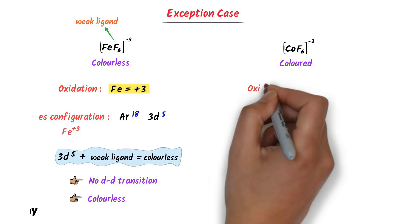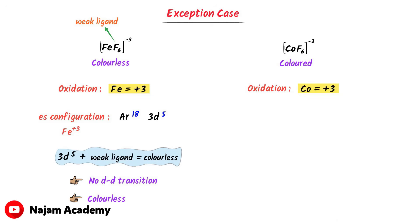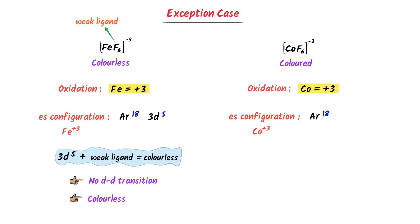On the other hand, the oxidation state of cobalt is +3. The electronic configuration of Co³⁺ is [Ar] 3d⁶. There are 6 electrons present in the d-orbital, not 5. Thus there are unpaired electrons present in the d-orbital, d-d transition is possible, and it is therefore a colored compound. So hexafluoroferrate is colorless and hexafluorocobaltate is colored — note this important exception case.